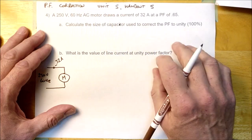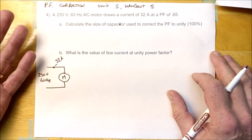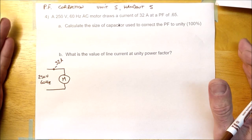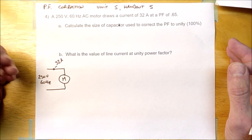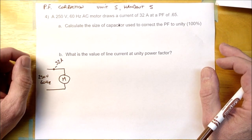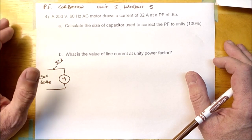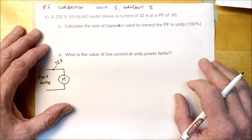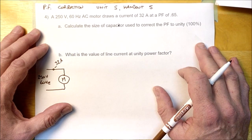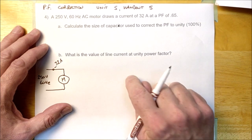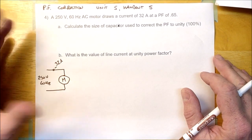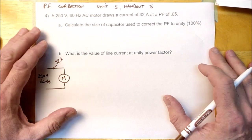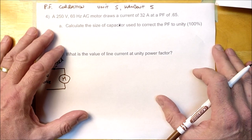So when we do power factor correction, we're going to be taking inductive loads and adding capacitors to them in parallel in order to improve their power factor either to unity — meaning the power factor is 1 and the phase angle is 0 — or we're going to correct loads to 90%. Those are the two power factor correction types we're going to cover. We're going to start with correcting a circuit to unity, and then we'll also learn about correcting the power factor to 90%.